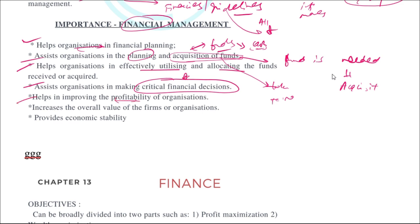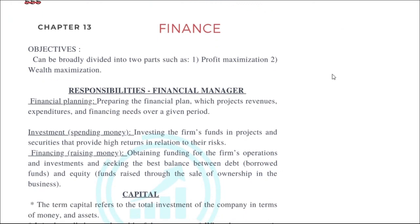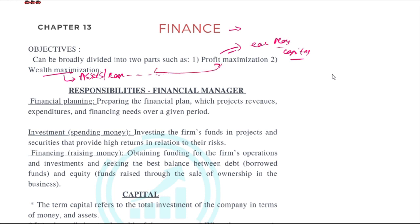Financial management helps improve profitability — since you know how much funds and assets are there, using them judiciously based on the financial plan may lead to profitability. It also increases the overall value and provides economic stability to the organization. Broadly, finance deals with two objectives: profit maximization, which means earning more profits or capital, and wealth maximization, which includes assets and cash in hand.